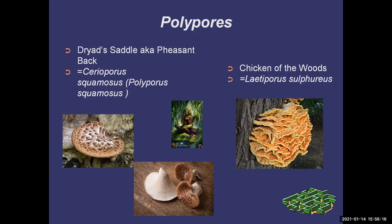Another thing that makes them easy to recognize is they smell like watermelon rind — it's very weird. They usually flush in May and are often found on elm trees. If you're going to harvest them for eating, you want to get them when they look like little buds because they're very tender at that stage. When they're bigger and older, they're more like a piece of cardboard and pretty well inedible — not poisonous, just tough.